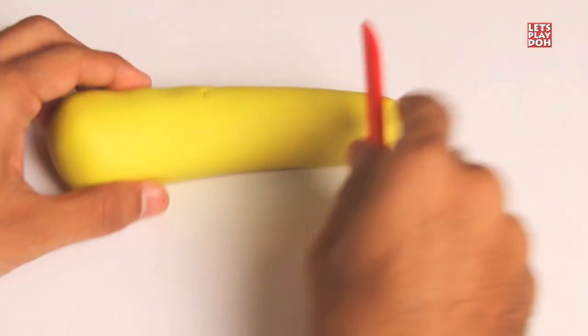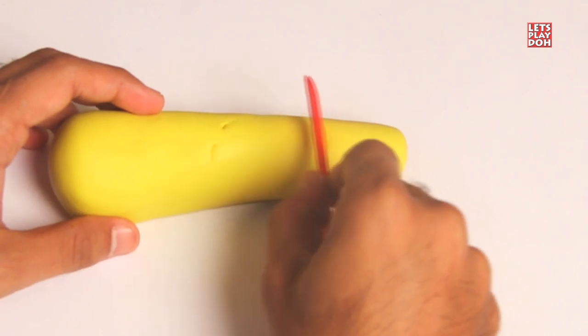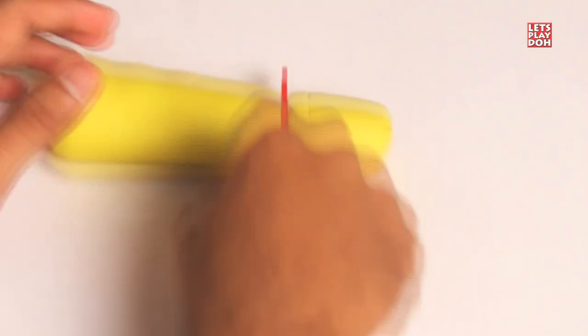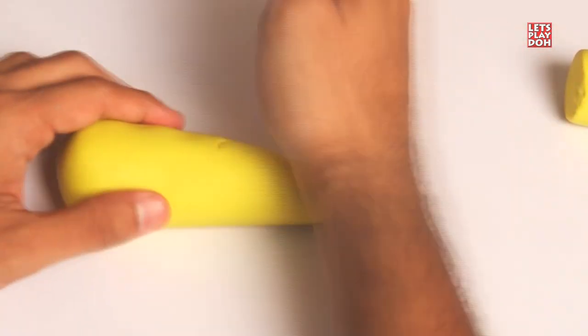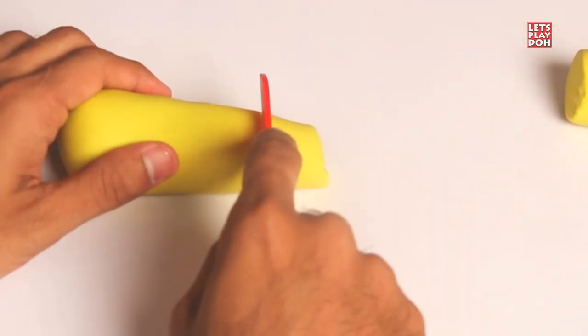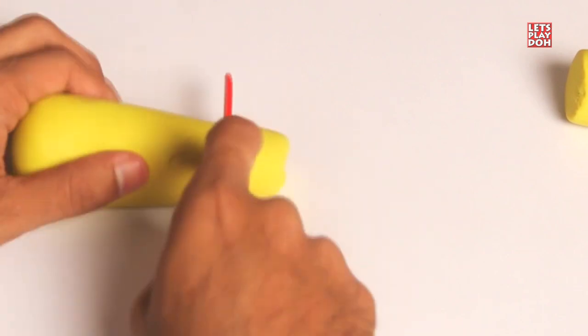And go ahead and use a Play-Doh knife and about one third of the way through you can cut off a piece. Then roll again and using the Play-Doh knife go ahead and cut off another piece.